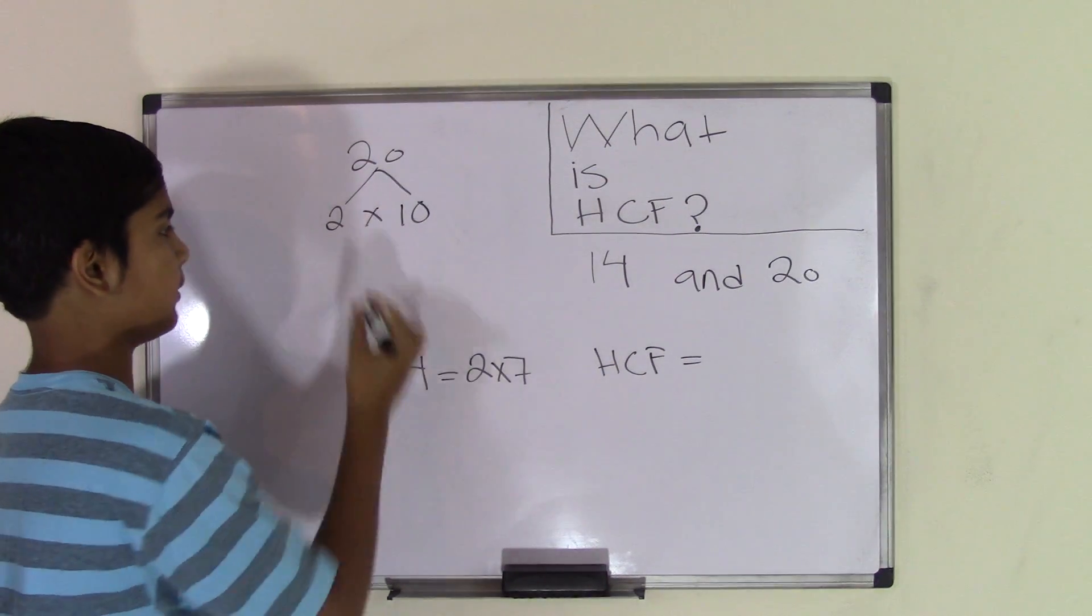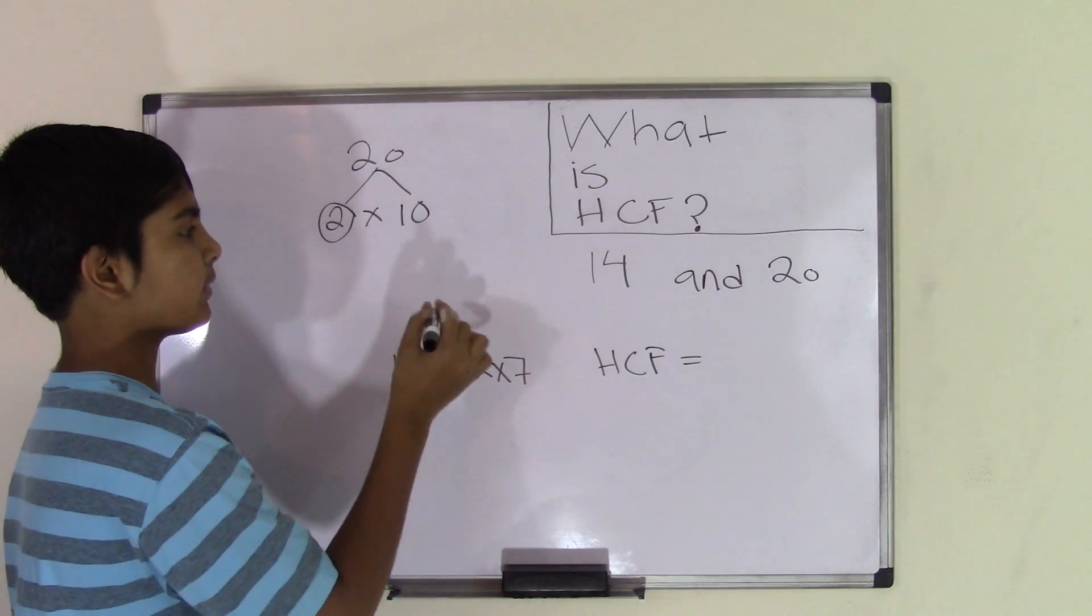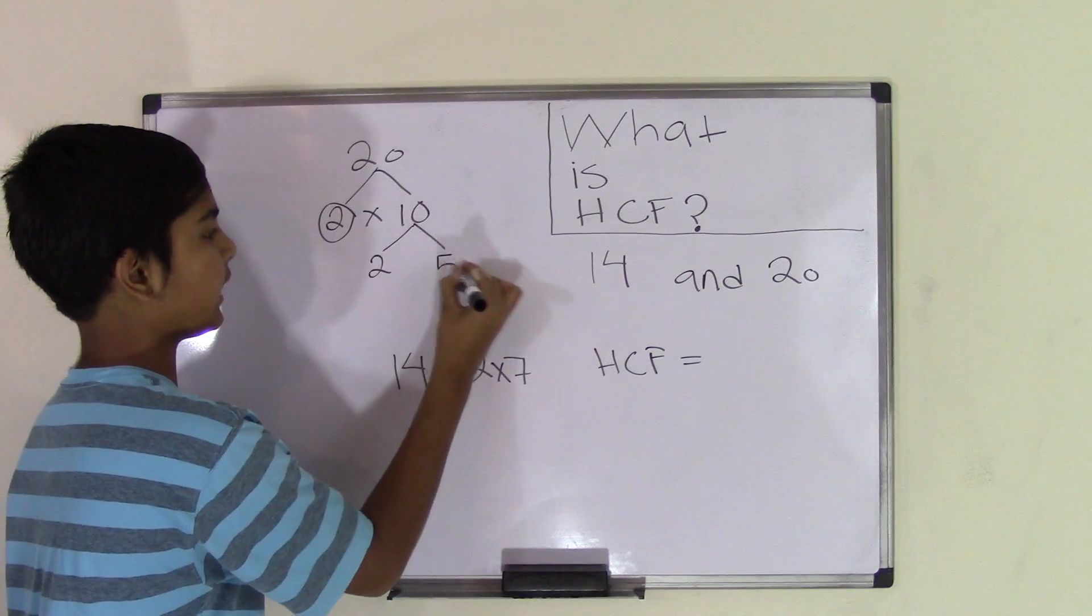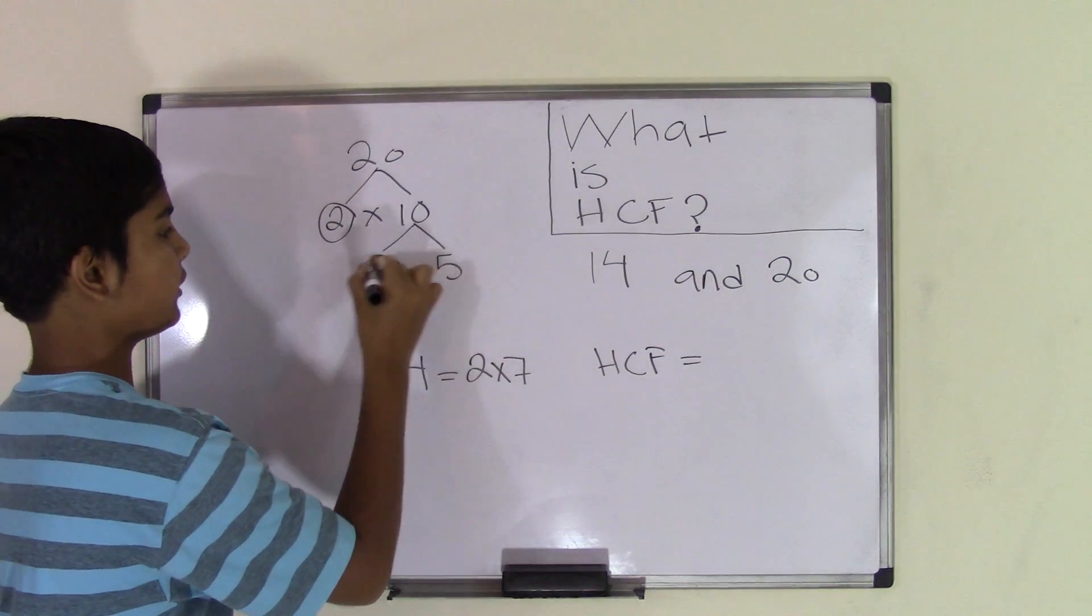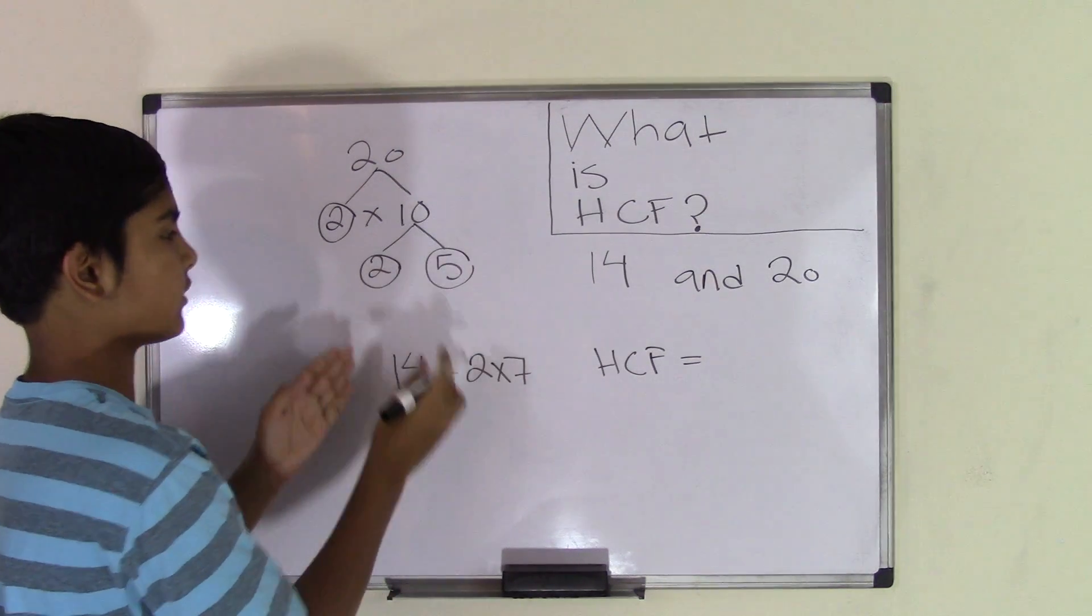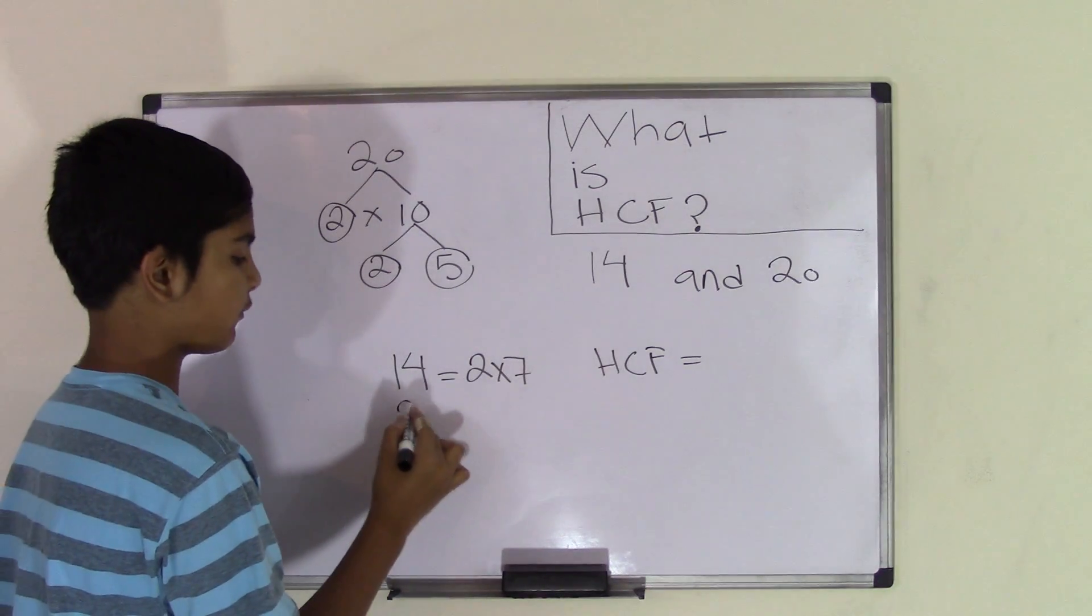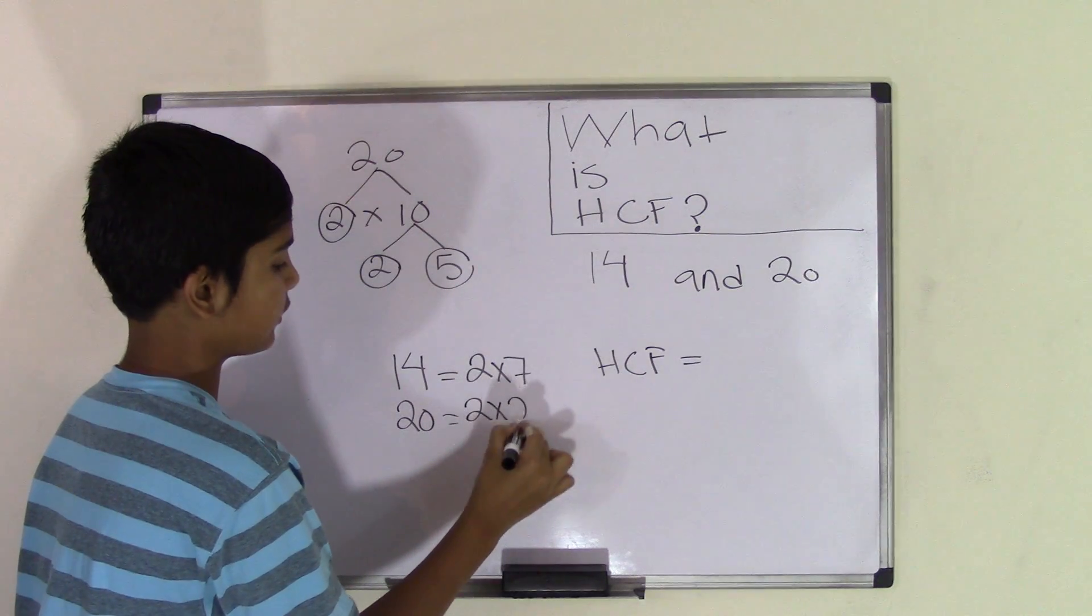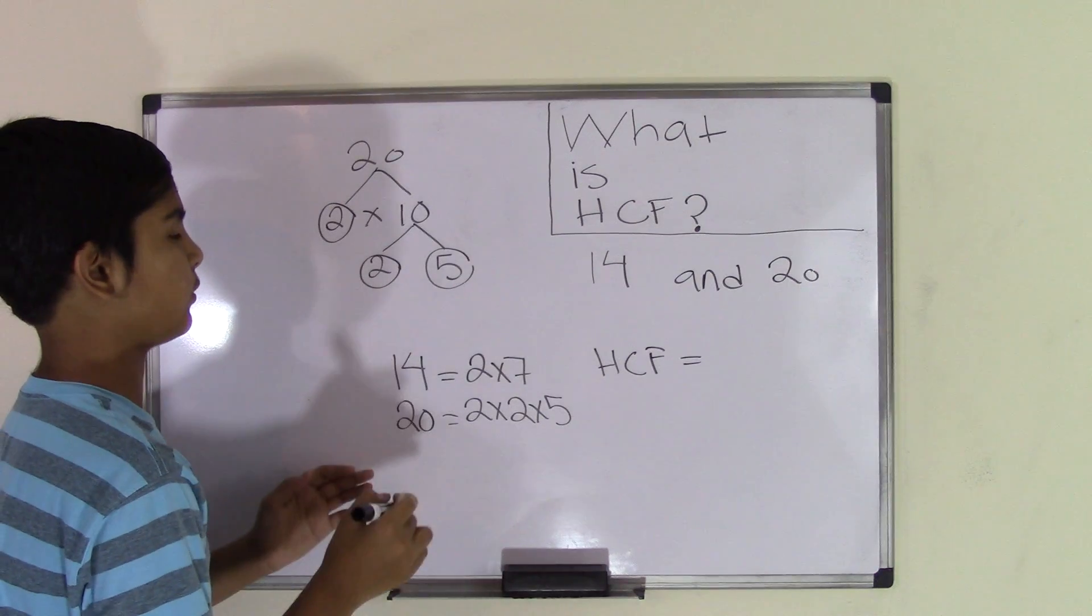Now we circle all the prime numbers, and the number 2 is the only prime number. Number 10 is composite, so we can break it apart more. We know that 2 times 5 is 10. Now again, we circle all the prime numbers, which are 2 and 5. At the end, since we have two numbers circled, we have all of our factors. So the factors for the number 20 are 2 times 2 times 5.